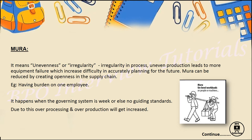Next, the second topic is Mura, which means unevenness or irregularity. Let's jump directly to an example. Consider a BPO company wherein employees are working. The first employee is happy and the second is not. The reason is the first employee had good process knowledge and got proper training, but the other employee did not get proper training. This means the team doesn't have proper governance for all associates, leading to defects in the process. The same happens in industrial companies. This is known as unevenness or irregularity.